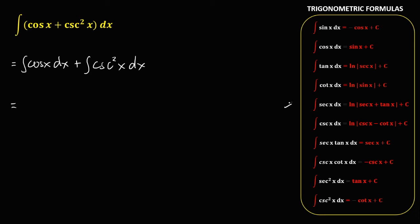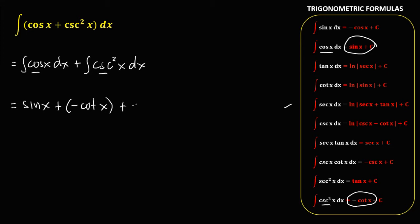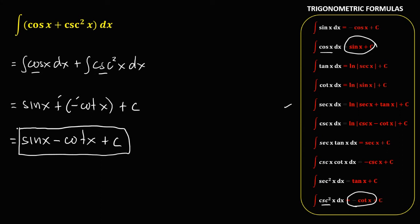Using these formulas, the integral of cosine x is equal to sine x. Plus the integral of cosine squared x, that's equal to negative cotangent x. Then plus c. Simplifying: sine x minus cotangent x plus c. So this is the final answer.